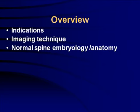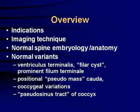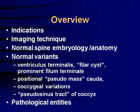We'll talk about indications, the imaging strategy, and normal anatomy and embryology of the spine. We'll then talk about normal variants, what the phylacist is, pseudomass, coccygeal variations, and the pseudosinus tract. Lastly, we'll talk about the actual pathologic entities that we use ultrasound to look for.